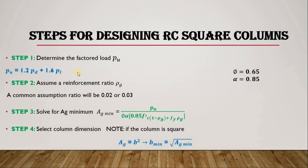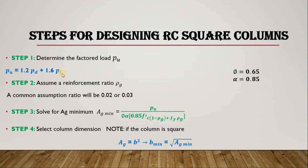Step one: you first need to determine the factored load PU. The formula is 1.2 multiplied by the dead load, plus 1.6 multiplied by the live load. The dead load is basically going to be the self-weight of the column; we can also have additional dead loads that are not moving. So the formula for the factored load is 1.2(DL) + 1.6(LL).